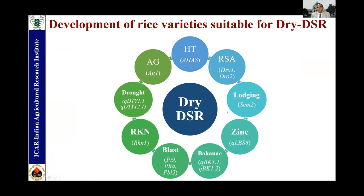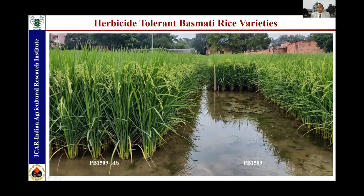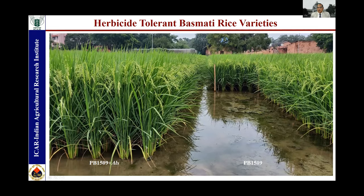Direct seeded rice is the future of rice cultivation. For direct seeded rice, herbicide tolerance is one of the most important traits for breeding, because weeds are the major culprit for productivity loss. Additional required traits include drought tolerance, lodging resistance, zinc deficiency tolerance, bakanae resistance, blast resistance, root-knot nematode resistance, and anaerobic germination. We have come out with rice varieties that have herbicide tolerance, developed ourselves through a mutagenesis process of the ALS gene — acetylactate synthase gene. The original variety 1509 is killed on spraying the herbicide Imazethapyr, but the improved version of 1509 basmati variety, with the mutant allele of ALS transferred, is completely resistant. This would provide a means for direct seeded rice cultivation with no weed loss.